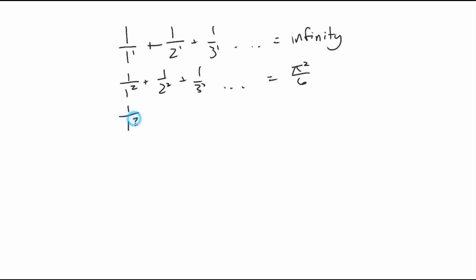That's an interesting number. We got 1 over 1 to the 3 plus 1 over 2 to the 3 plus 1 over 3 to the 3. That actually equals 1.202. It's not very interesting. 1 over 1 to the 4 plus 1 over 2 to the 4 dot dot dot equals pi to the 4th over 90.